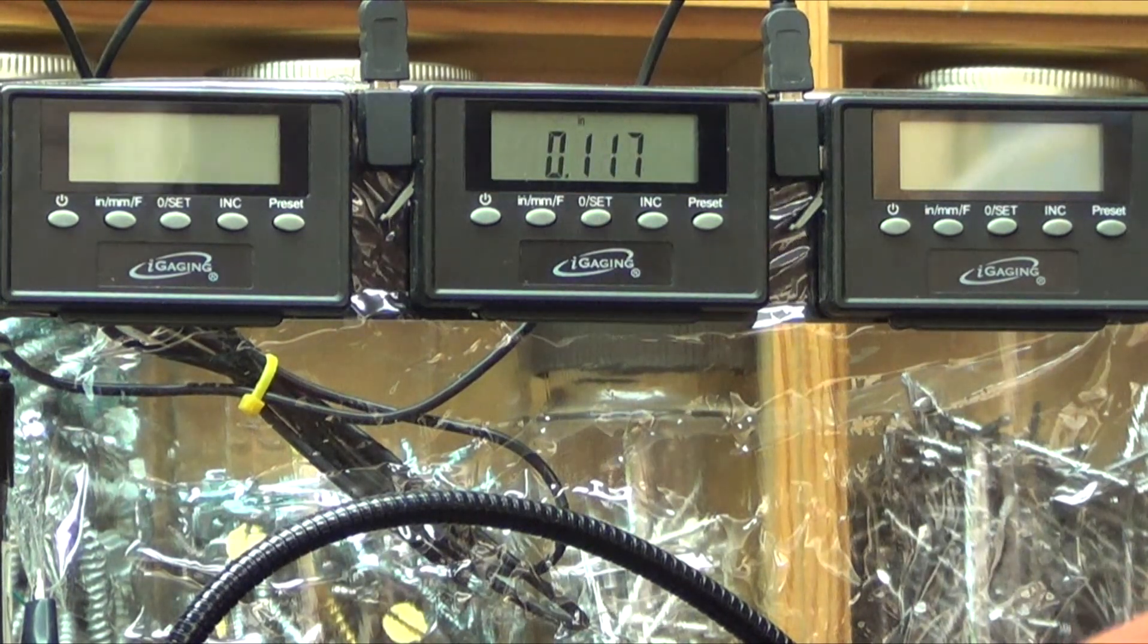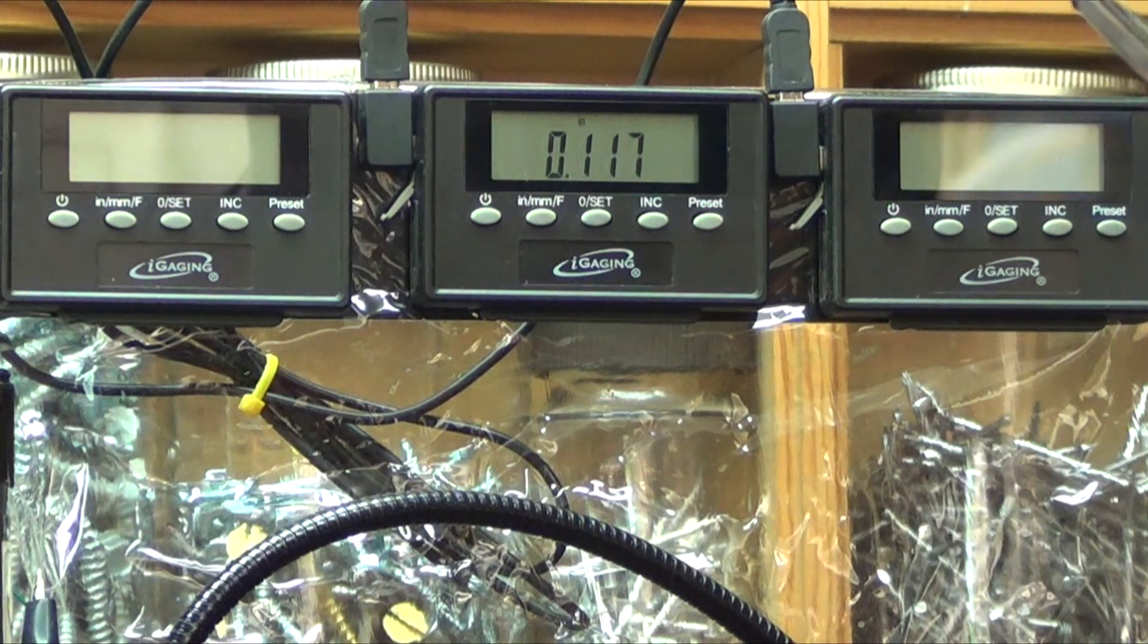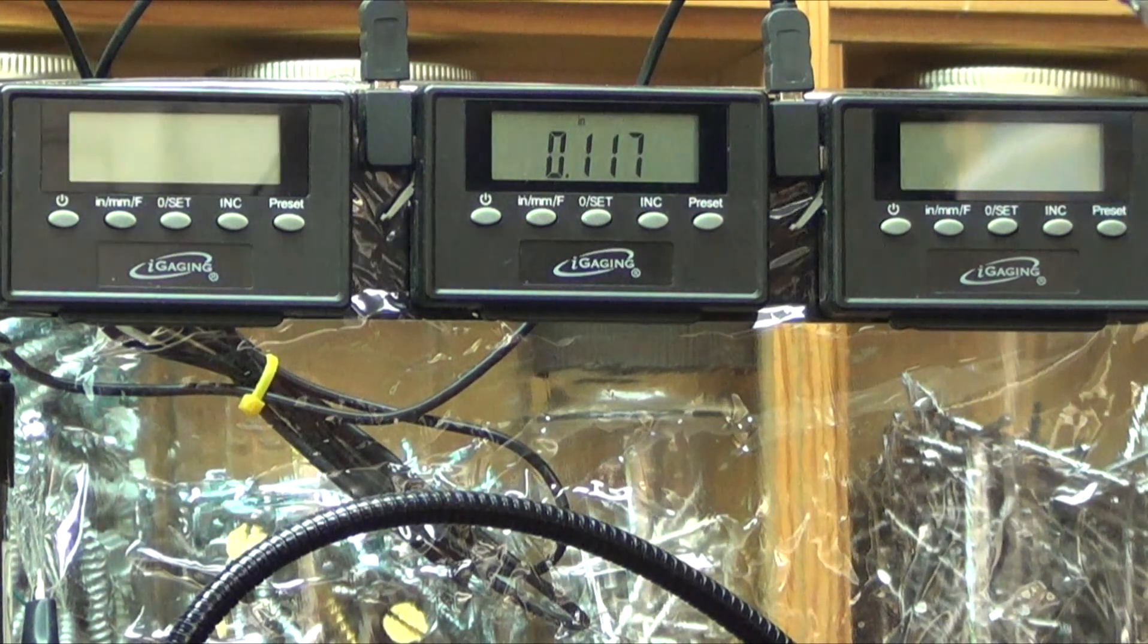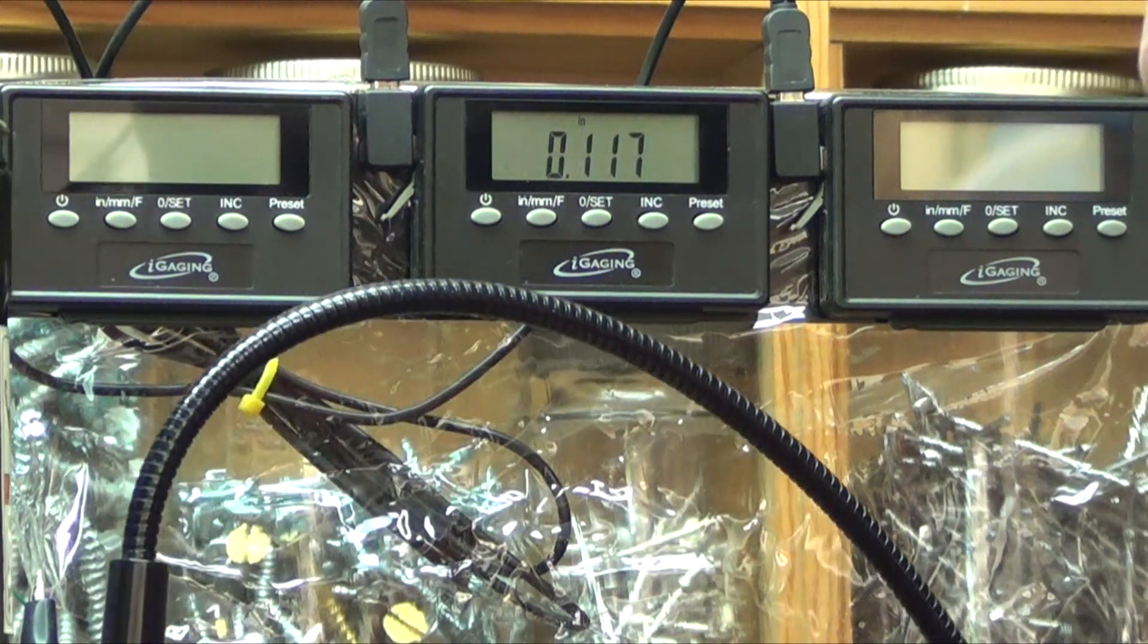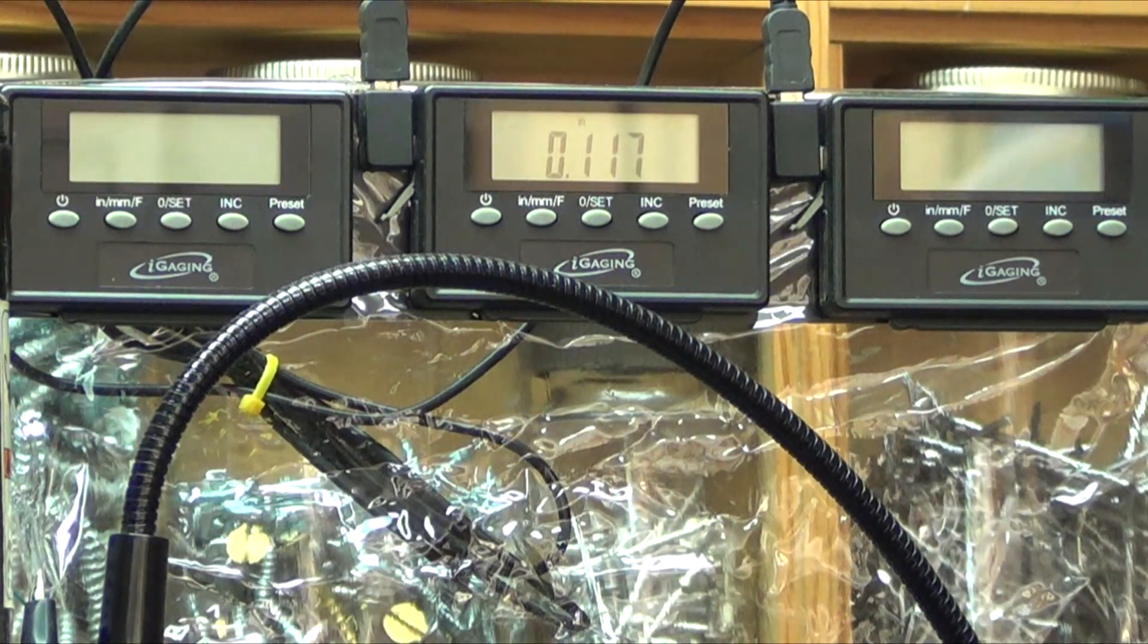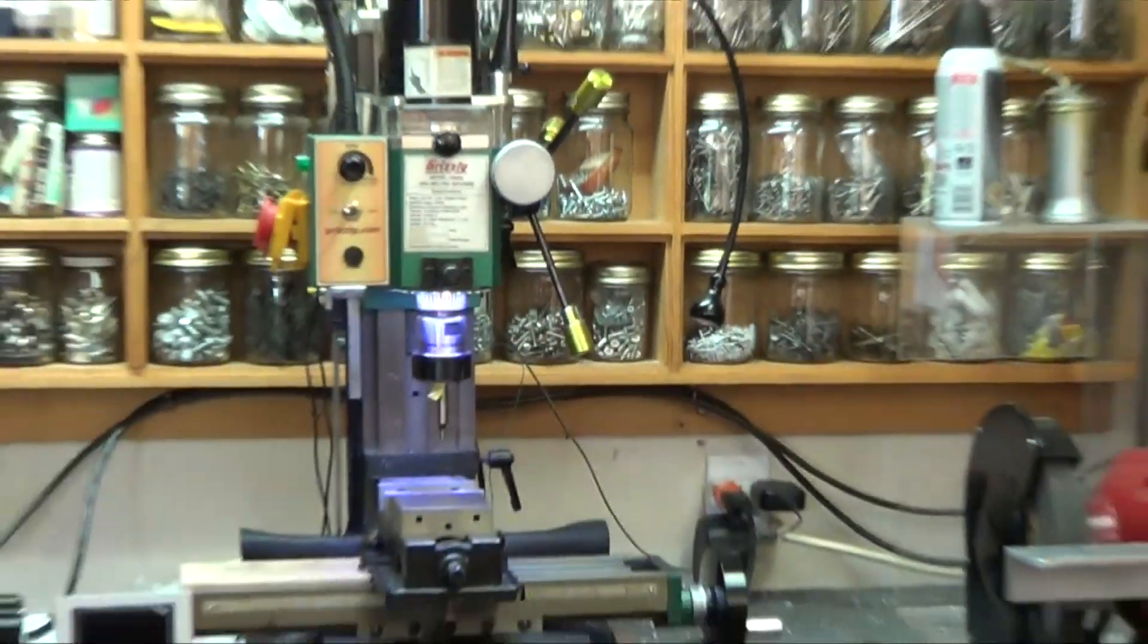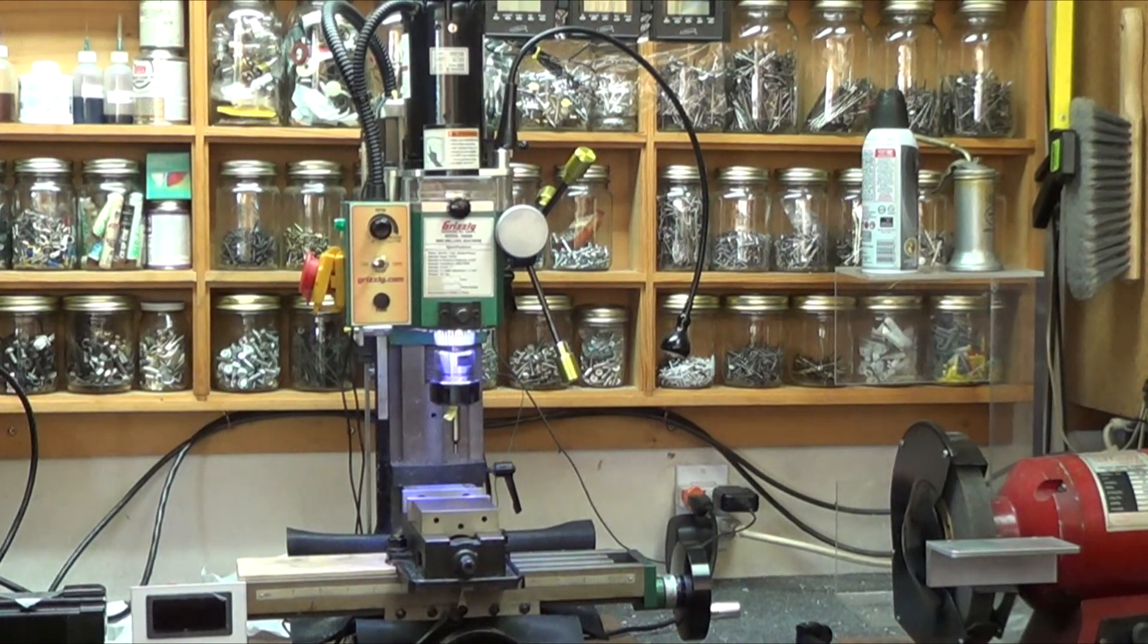What it is, is the edge finder is always finding the edge with respect to the center of the spindle. It has nothing to do with anything else. So you're always finding the center of the spindle.